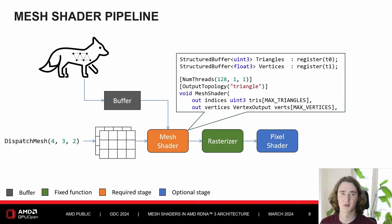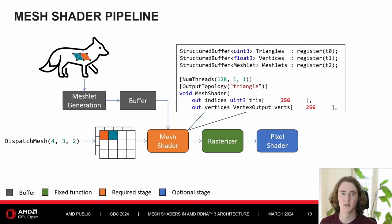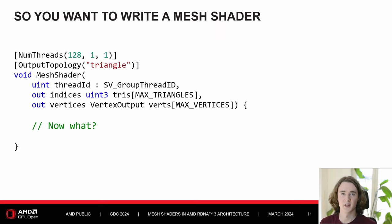A single mesh shader thread group can't run the entire mesh by itself — the number of vertices and triangles it can output is limited to 256 each. So if we want to render a larger mesh, we first have to split it into smaller parts, often referred to as meshlets. The exact way and parameters of splitting the mesh into meshlets is highly customizable and can be optimized to your needs, but we'll hear some general guidelines on this later on.